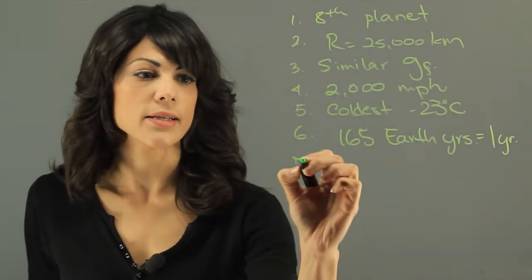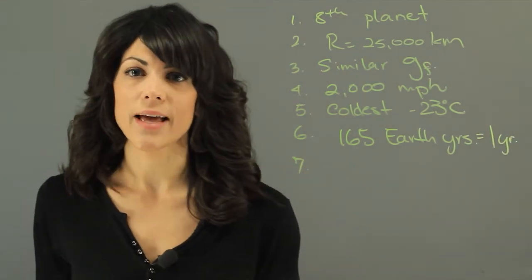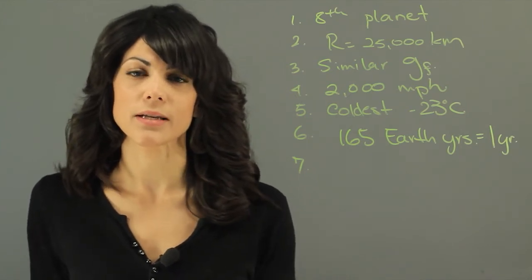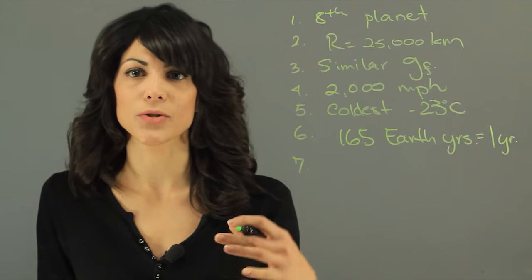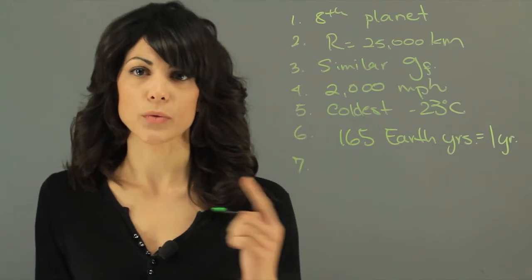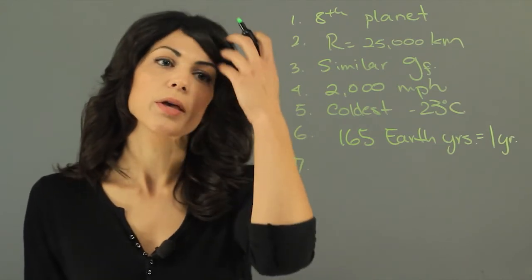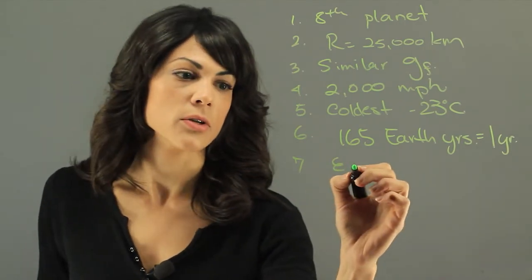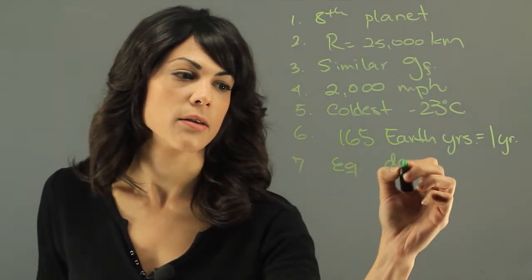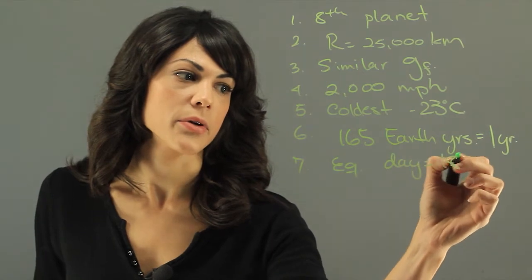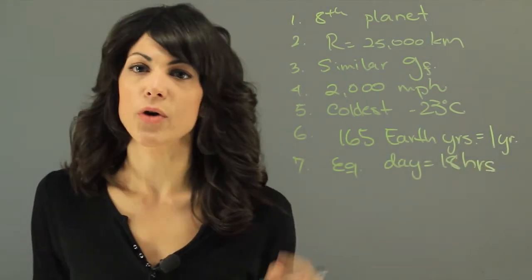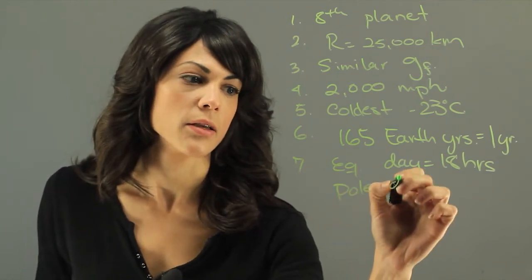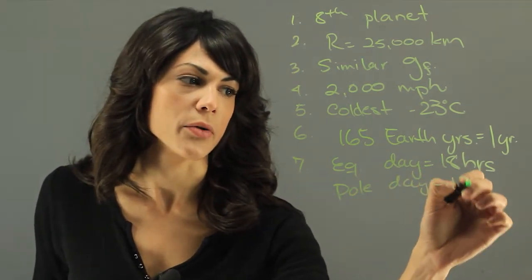Now, the next one is that the length of a day is actually very different depending where you are on the planet. Because Neptune is a gas giant, it doesn't mean that every layer is rotating at the same speed. So if you were in the equator, a day is 18 hours, so an equator day is 18 hours. And if you are at the pole, the poles are spinning a lot faster, so a pole day is 12 hours.